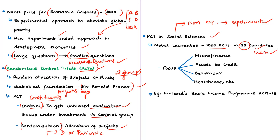Their main areas of focus were various dimensions of poverty, including microfinance, access to credit, behavior, healthcare, immunization programs and gender inequality. This shows that RCT is now an established technique in social sciences and is regarded as the simplest and best way of assessing the impact of a program.